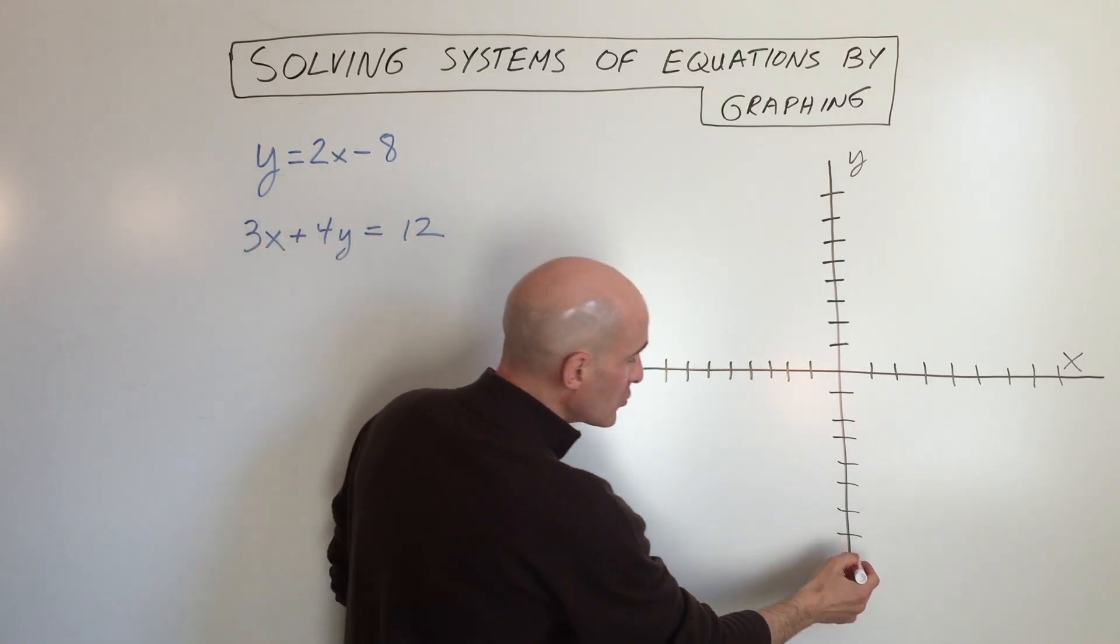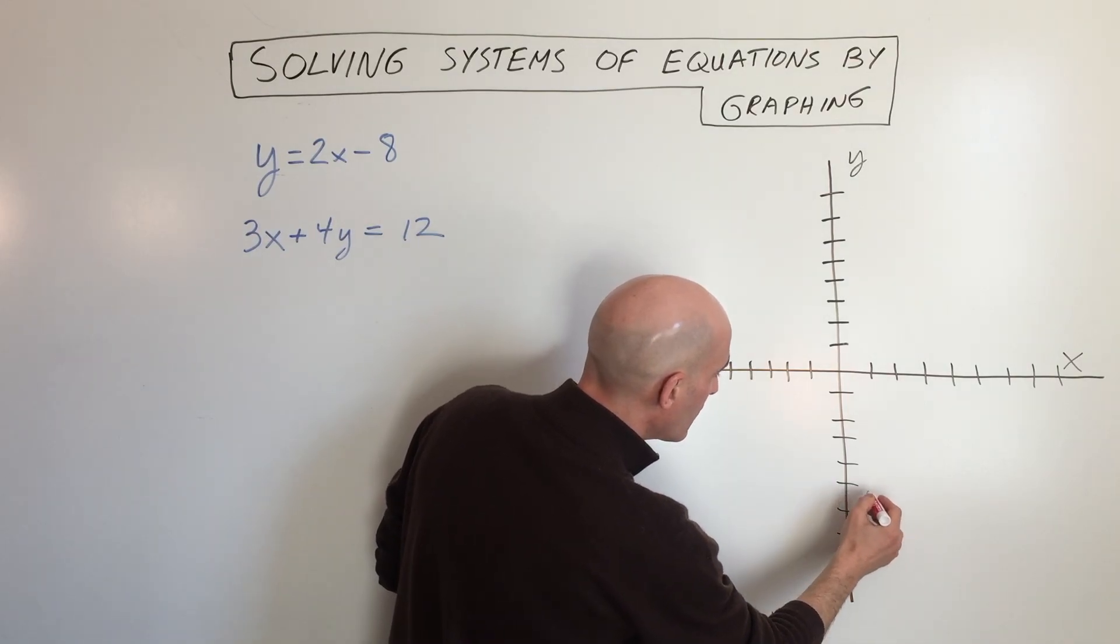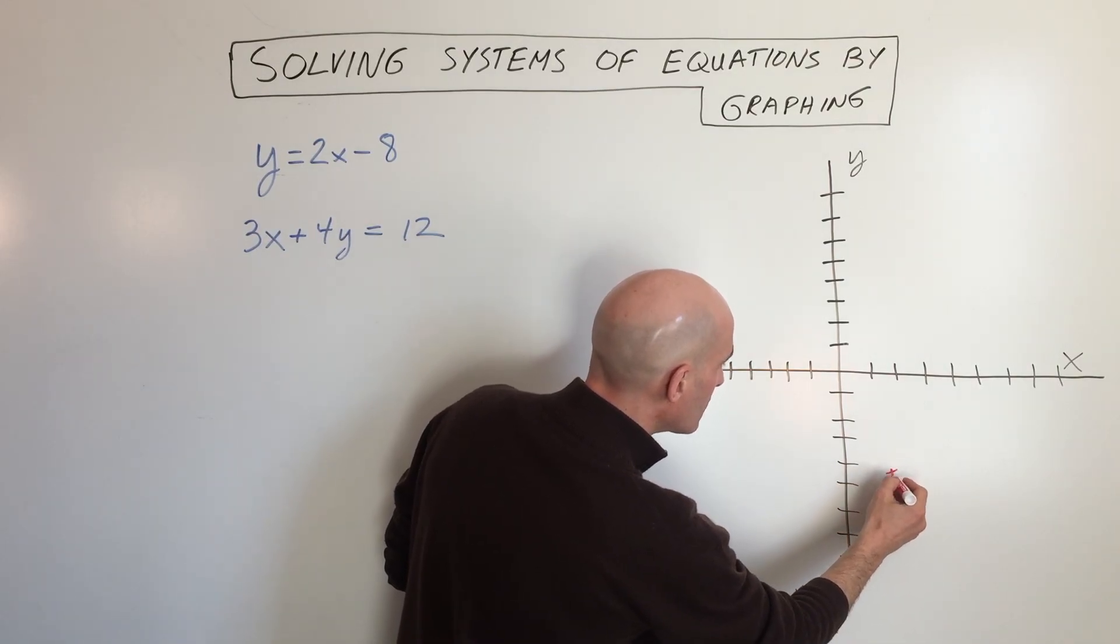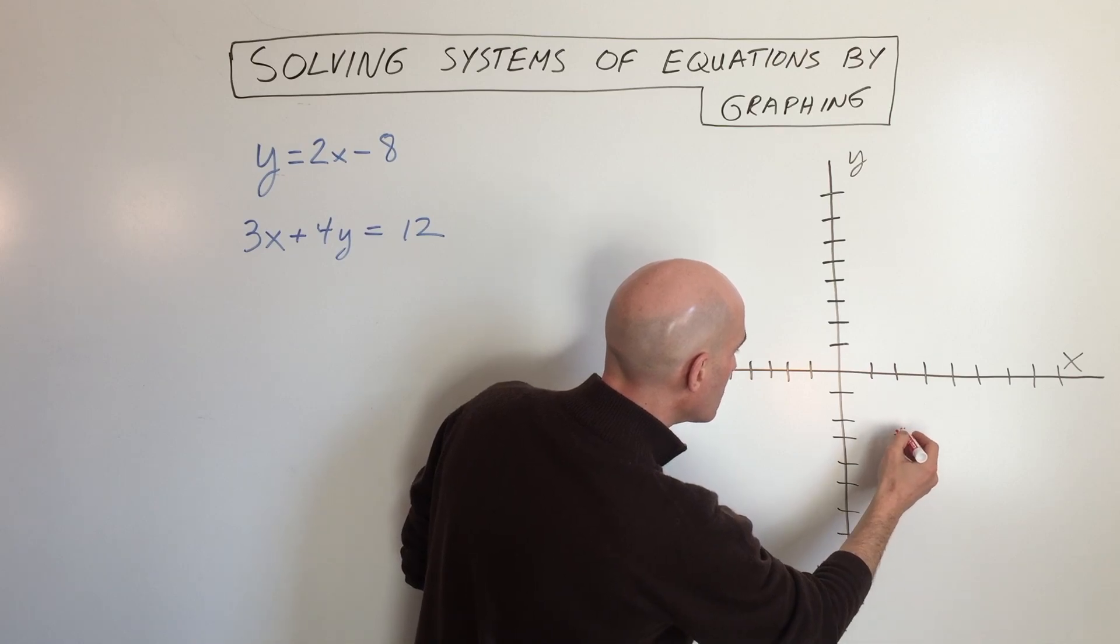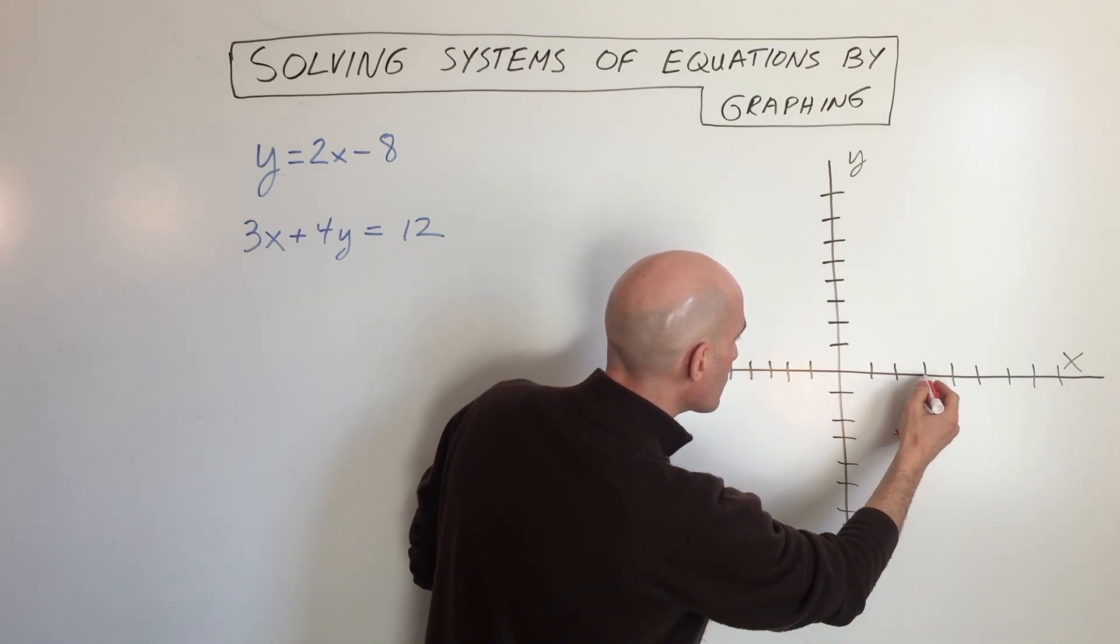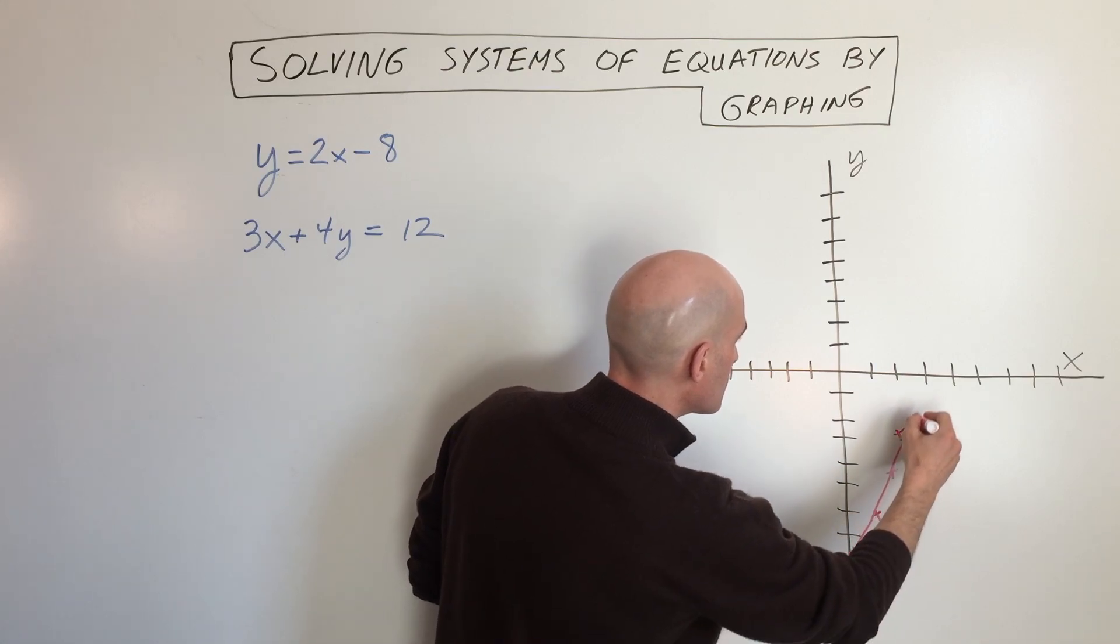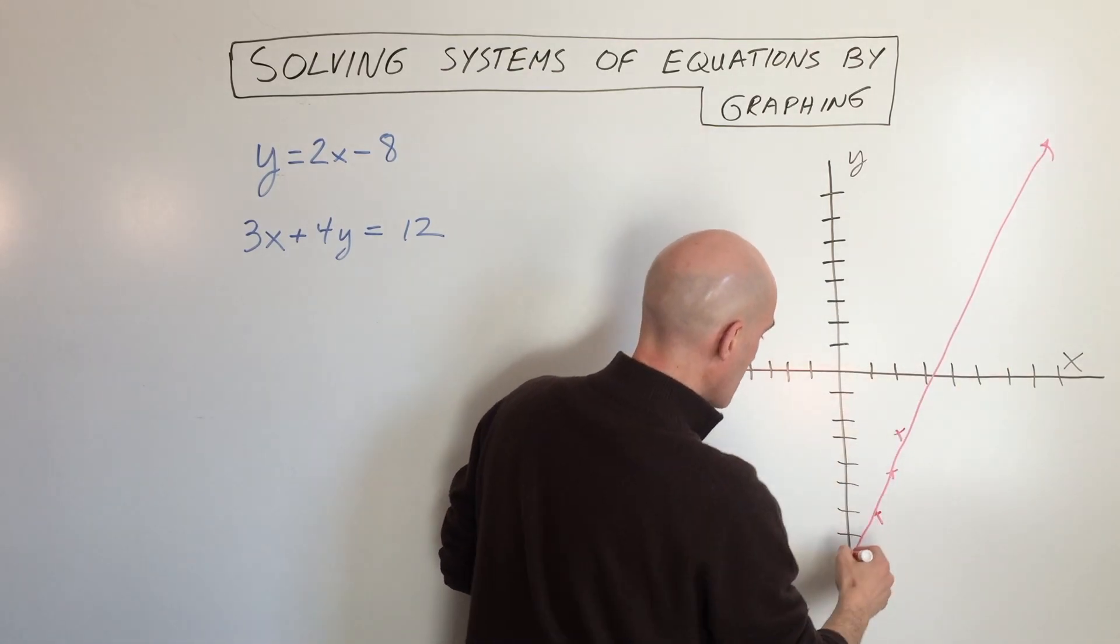The slope is two, so up two over one, continuing with that pattern. Okay, so there's our line.